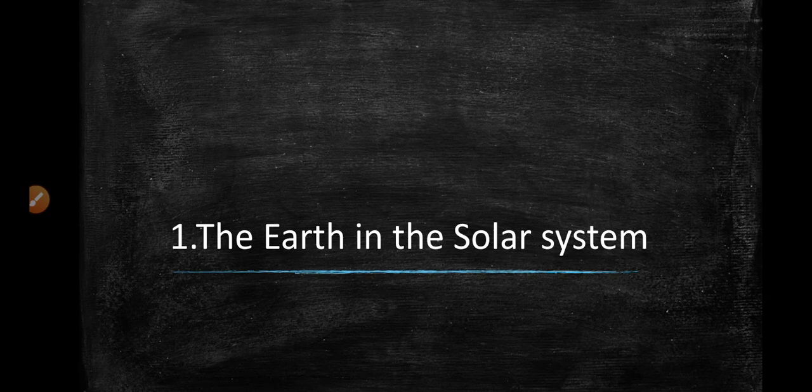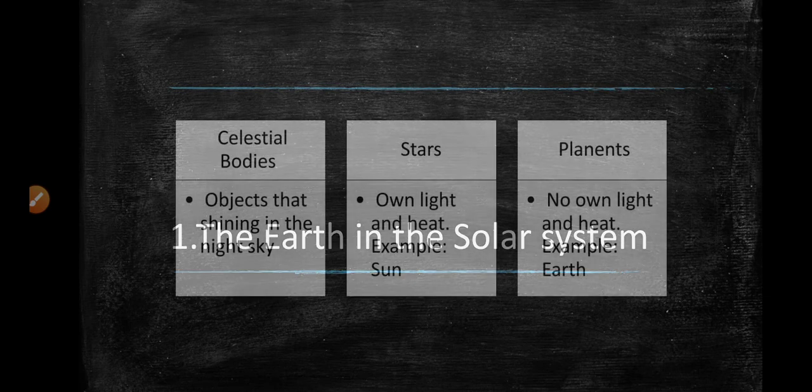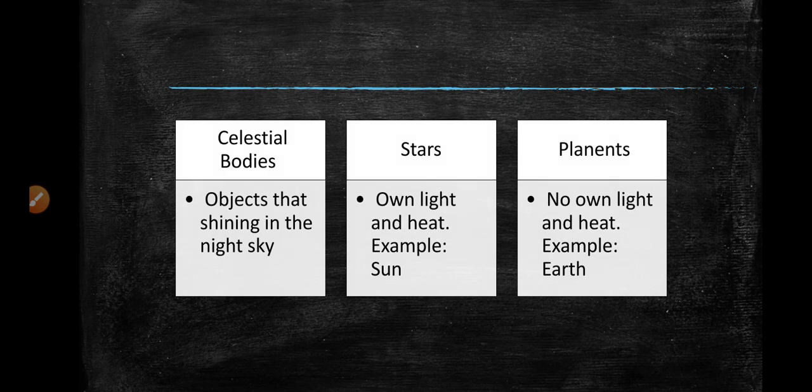The Earth and the Solar System. Objects that shine in the night sky are called Celestial Bodies.